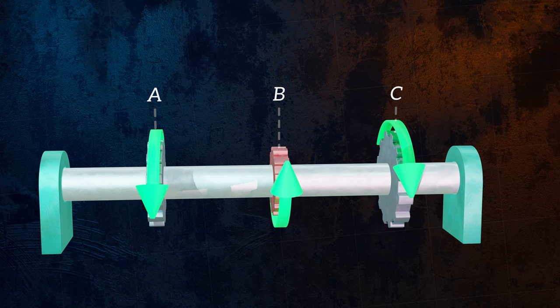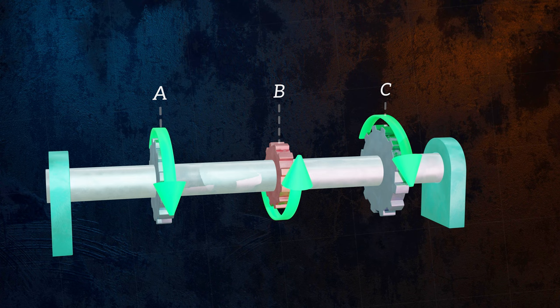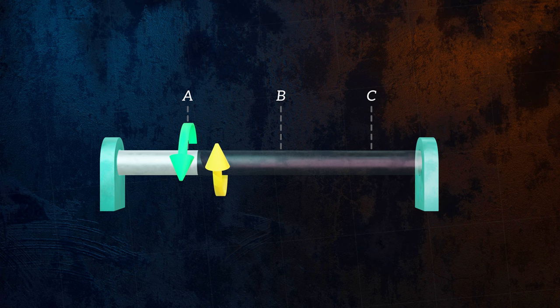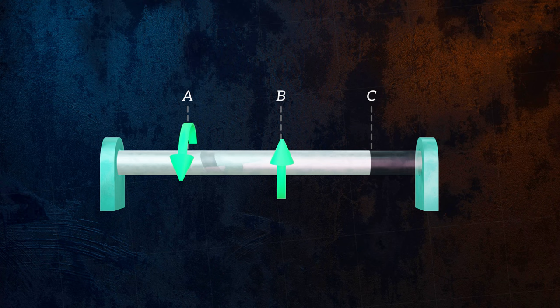The process for doing this is similar to calculating the shear force along a beam, which I covered in a separate video. First we draw a free body diagram. Then we make imaginary cuts, and use the concept of equilibrium to determine the internal torque at different locations along the shaft. This will give us an internal torque diagram that looks something like this.